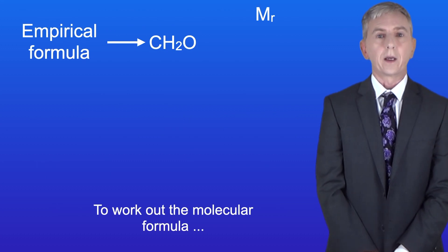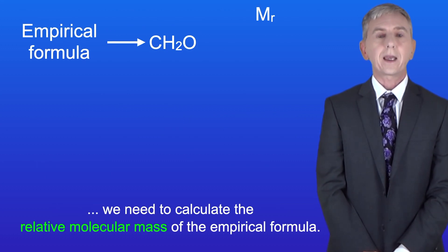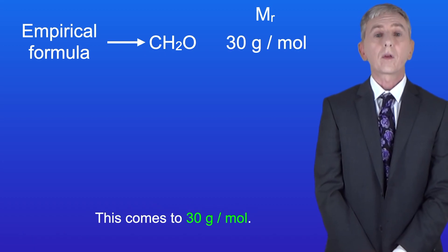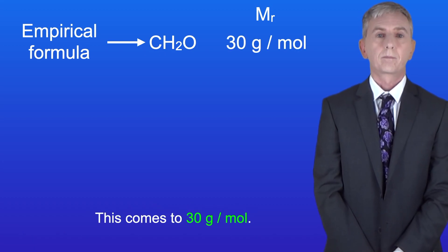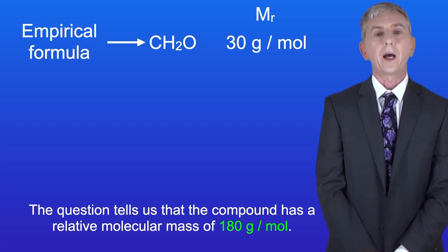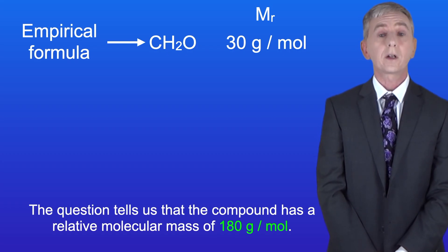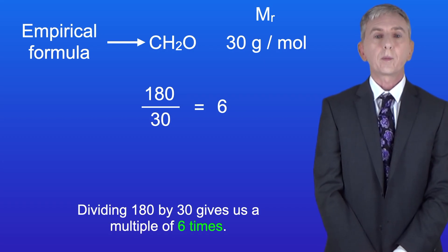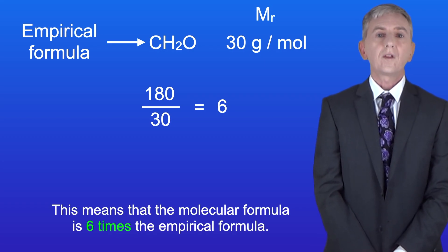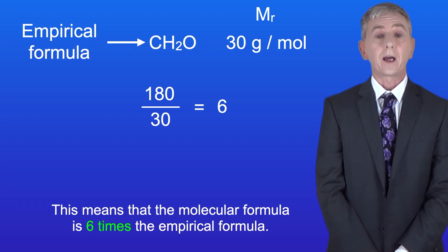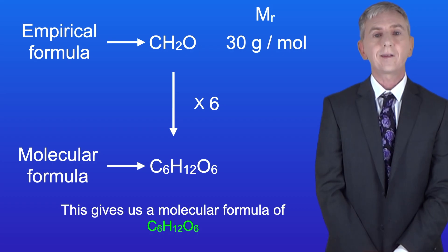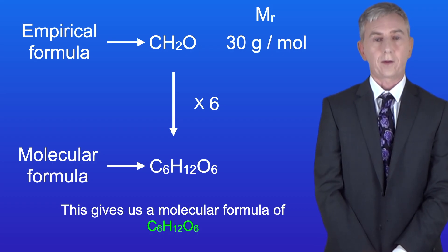To work out the molecular formula we need to calculate the relative molecular mass of the empirical formula. This comes to 30 grams per mole. The question tells us that the compound has a relative molecular mass of 180 grams per mole. Dividing 180 by 30 gives us a multiple of six. This means that the molecular formula is six times the empirical formula. This gives us a molecular formula of C6H12O6.